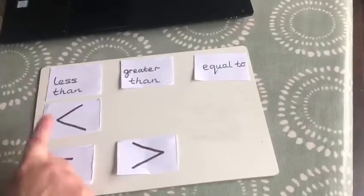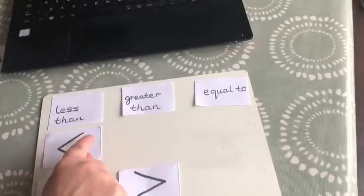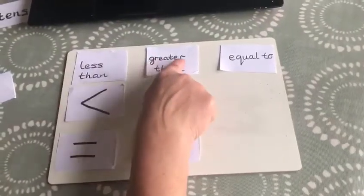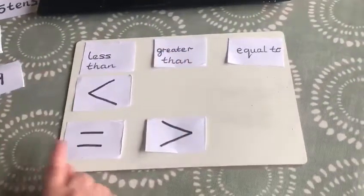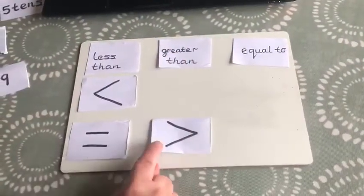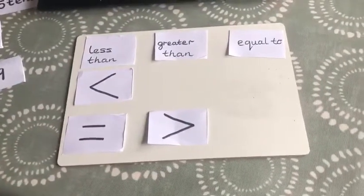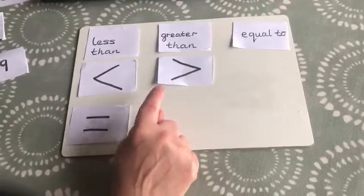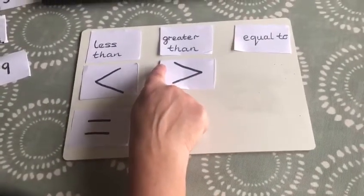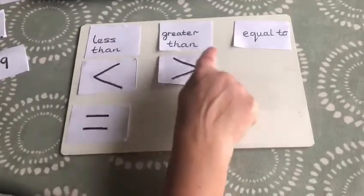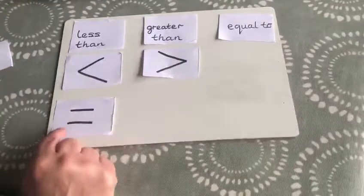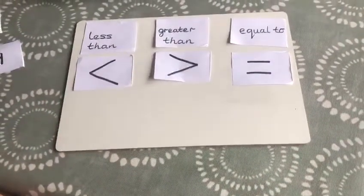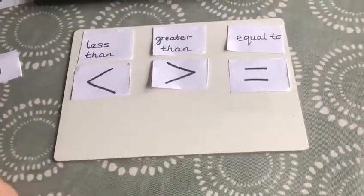All right, because remember from left to right this amount will be less than this amount. The next little card says greater than. Which symbol means greater than? Well done. It's this one, isn't it? Because again, going from left to right, this amount is greater than this amount, and that leaves us with this symbol which means equal to, or the same.